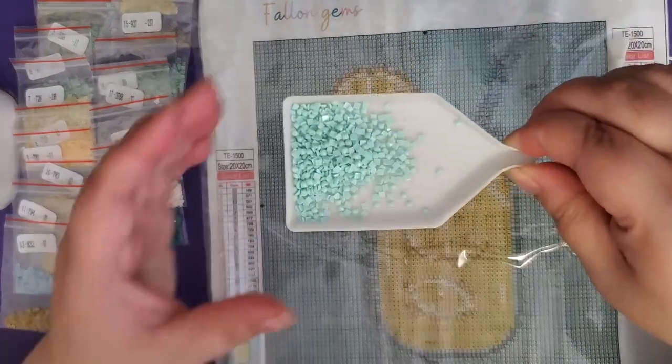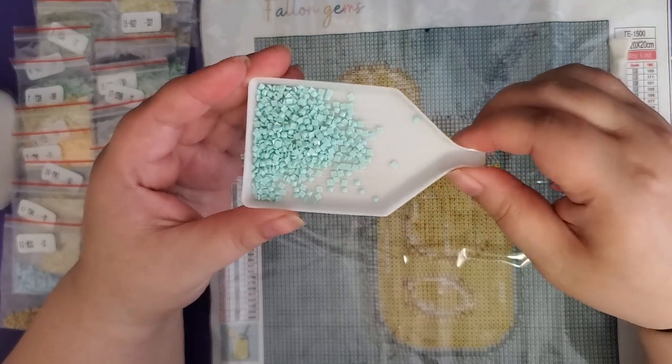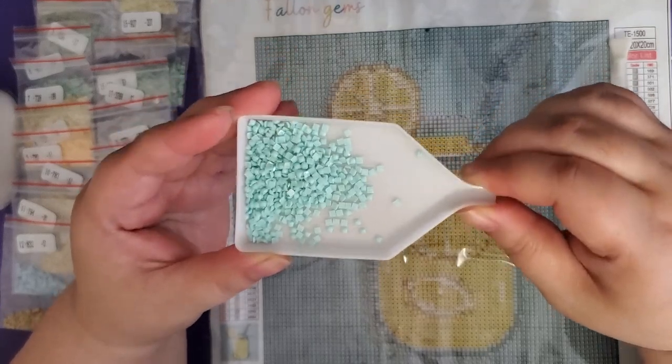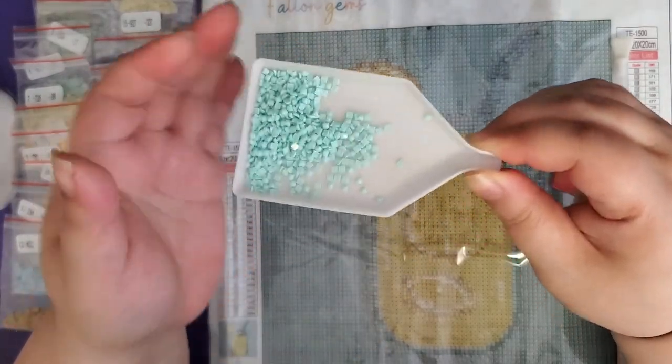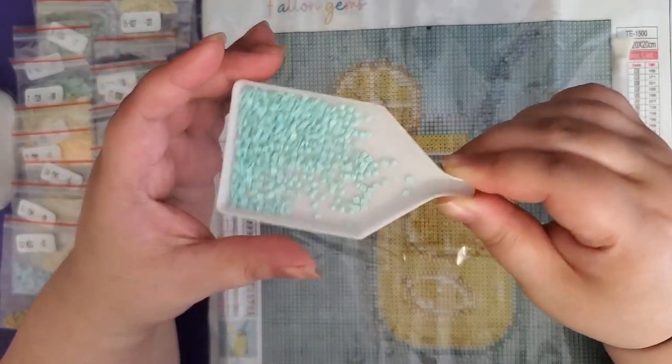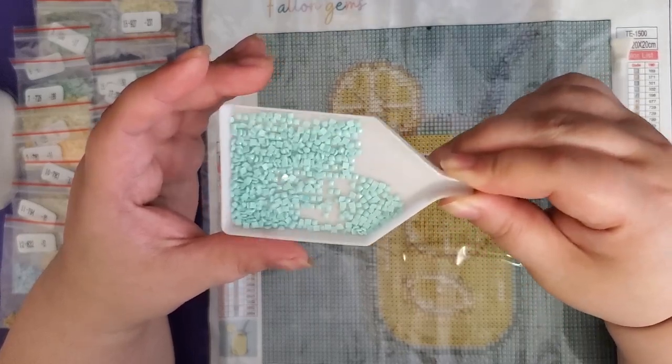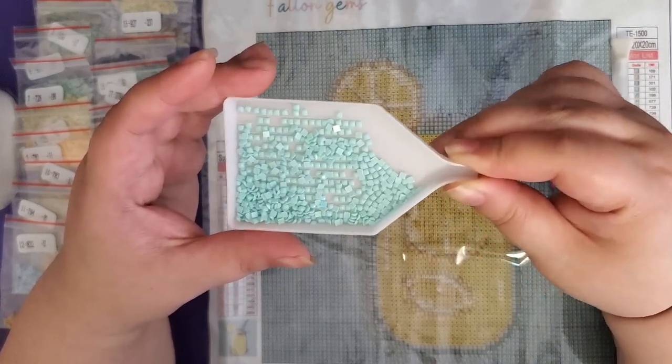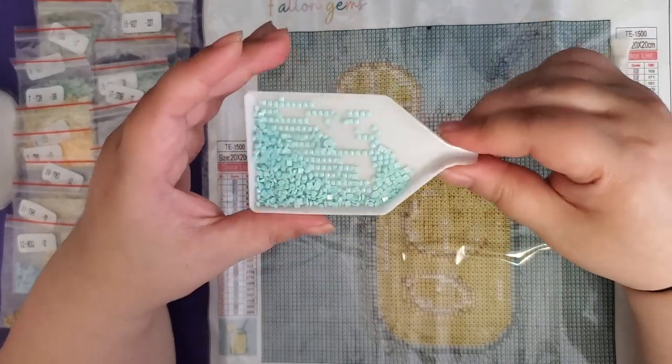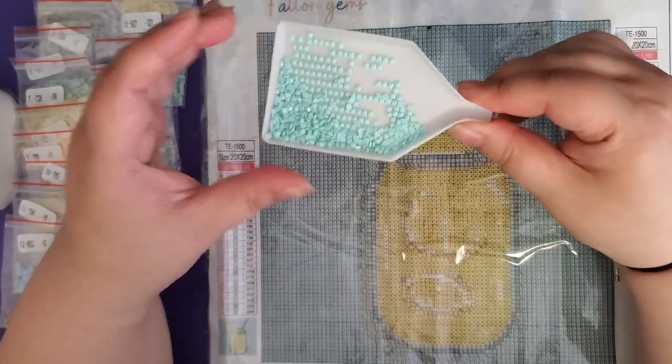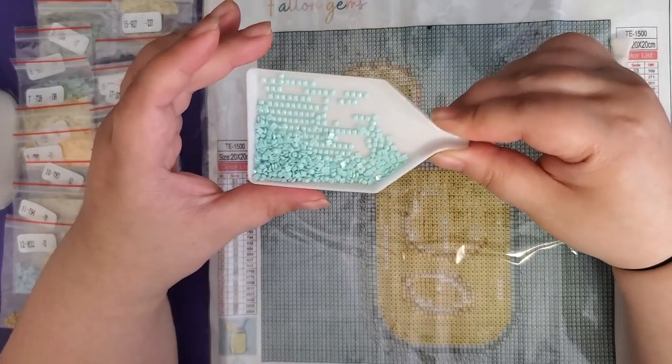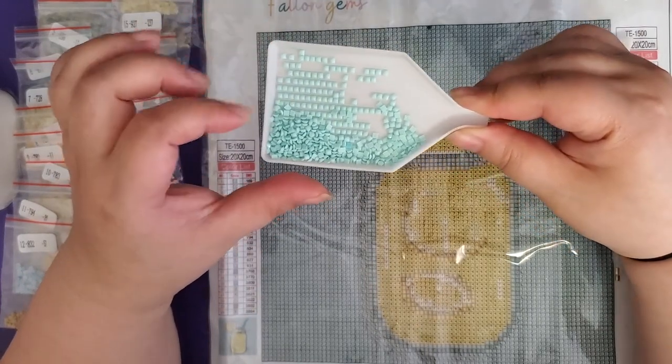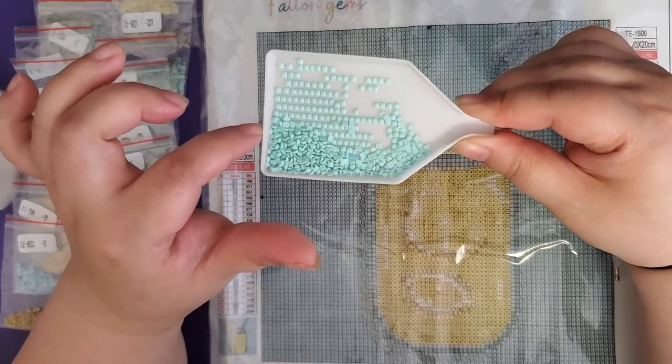And see how they're all bunched up? Well, we actually need to get these in a straight line, so we will shake this gently side to side until eventually your diamonds pull on one side of the tray and then you have rows.